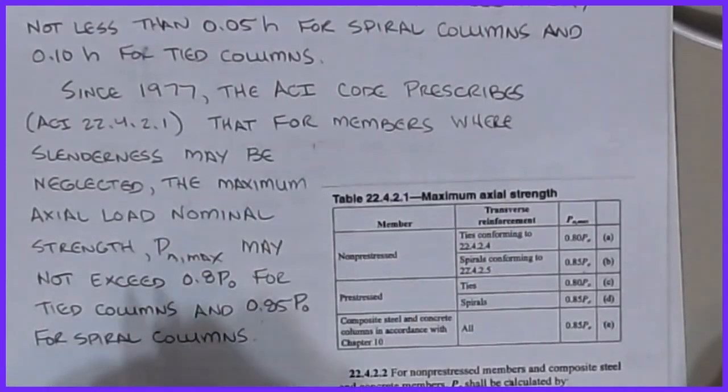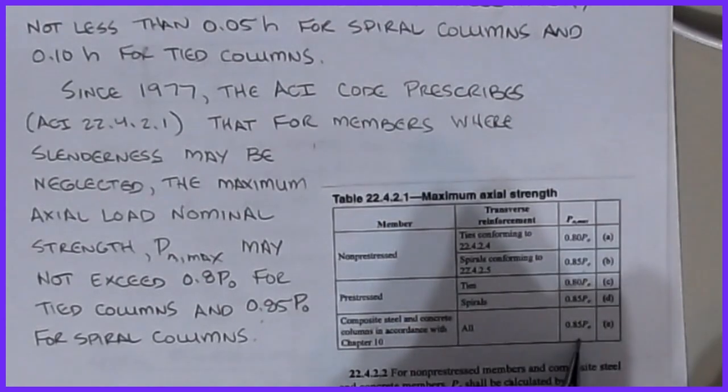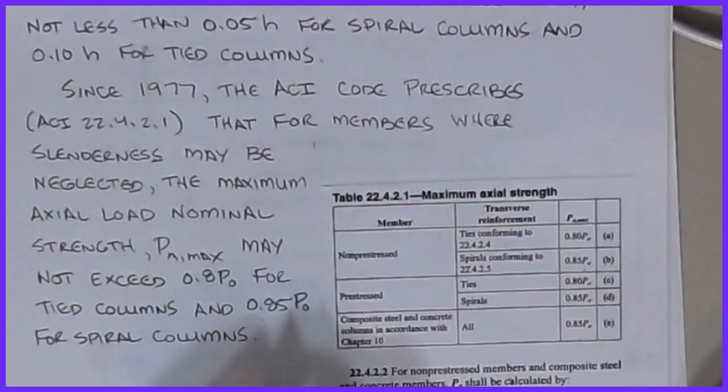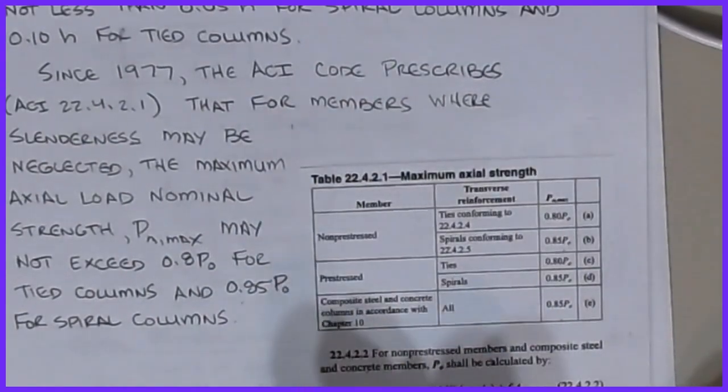If you have a composite structure, whether it's a steel core or a steel jacketed column, then it's just 0.85P₀, it gets treated kind of like a spiral. Once you have this, you pick off the one that you want for the coefficient, and then you can come in and you can calculate the actual P₀ value.